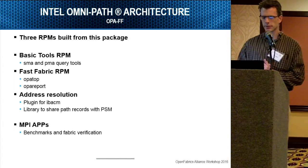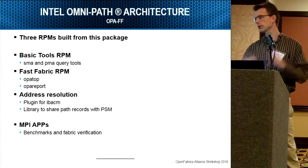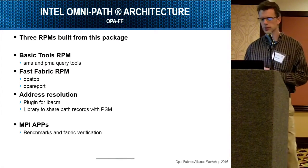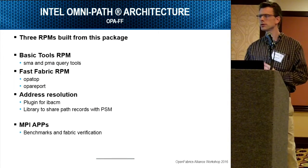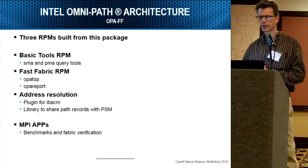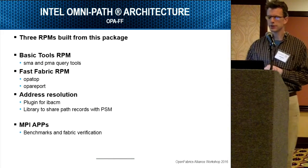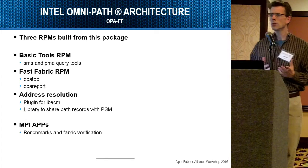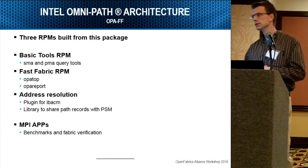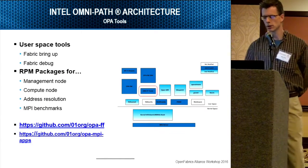A little more detail about the packages found in these tools — Jim Wright is going to talk about this in more depth, but here's a quick overview. We have the standard tools for compute nodes: SMA, PMA, query tools. Then we have the Fast Fabric RPM, which is more centered on the management node, with tools such as OPA Top and OPA Report that give you in-depth knowledge of what's going on in the fabric. The address resolution component has a plug-in for IBACM and a library to share path record data between IBACM and our PSM library. The two GitHub repos where we're hosting these are found at the listed locations.